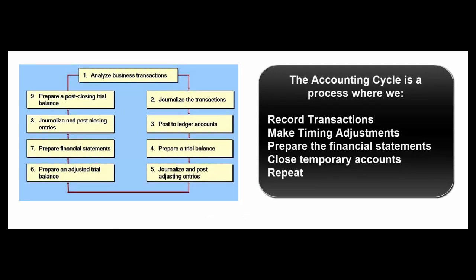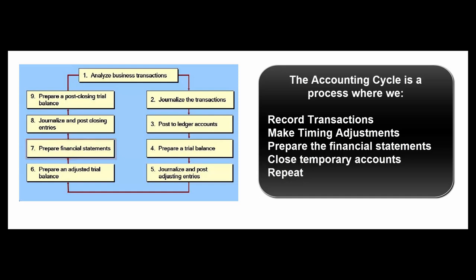The big picture: the accounting cycle is a process by which we record transactions that can be reliably measured in dollars, make some adjusting journal entries for timing differences, prepare our financial statements, close our temporary accounts — revenue, expenses, and dividends — and start all over again.